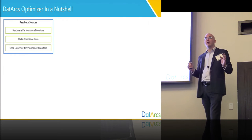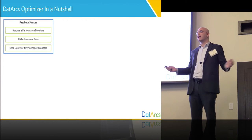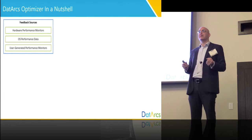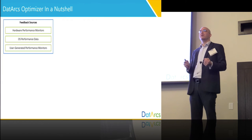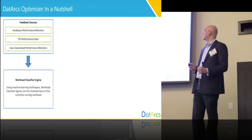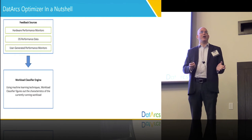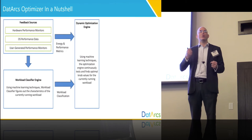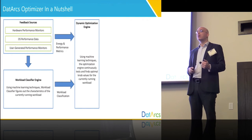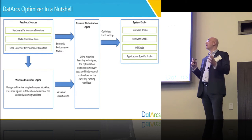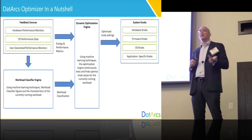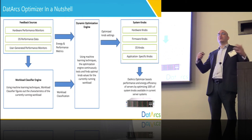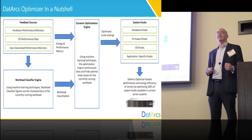I want to talk a bit more about the inner workings of the software — how does it work exactly? Optimizer harvests inputs from hardware performance monitors, from OS queues, and if available, from application queues. All of this is fed into a workload classifier that uses machine learning to classify the workload. Once the workload is classified, it's fed into a dynamic tuning engine which attempts to find the optimal knob settings for that specific workload. Every time settings are found, they're applied to the system — hardware knobs, firmware, OS, or even the application.